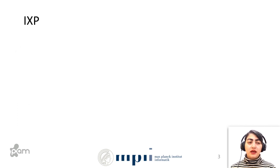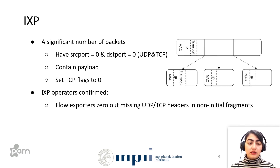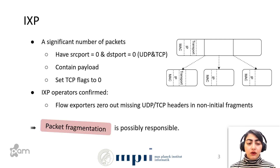We looked at IXP data containing IP fix flows. We observed a significant number of packets having both source port and destination port equal to 0 in both UDP and TCP. Most of these packets contained payload and they set TCP flags to 0. We decided to contact IXP operators and they confirmed that their flow exporters actually zero out missing UDP or TCP headers in non-initial fragments.